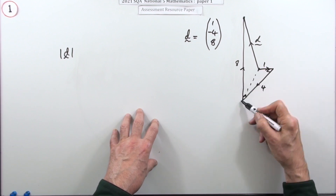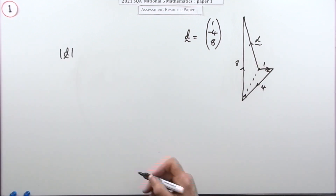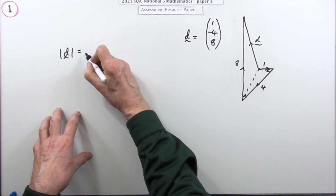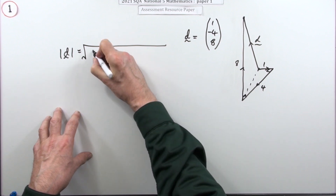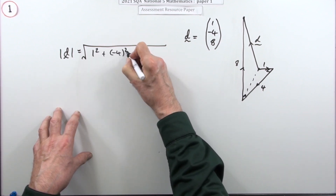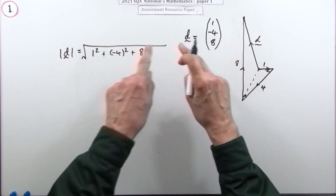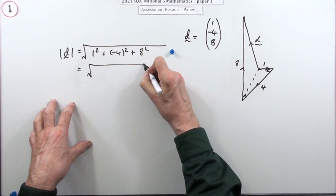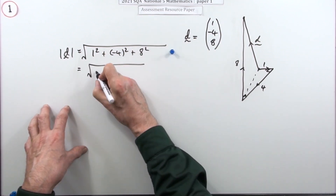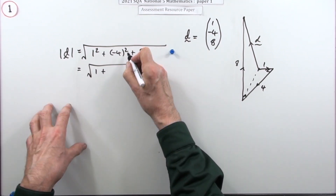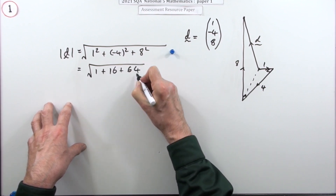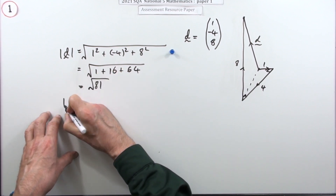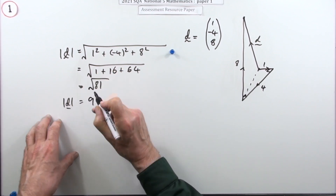Since it was already one squared and four squared, you just square all three components. Rather than writing this squared equals, just put the big square root. You'd have seen that and done it straight away — writing those three squared gets the first mark, and finishing it off gets the other. One squared is 1, negative four squared is 16, and eight squared is 64, giving 81. So the magnitude of d is the square root of 81, which is 9.